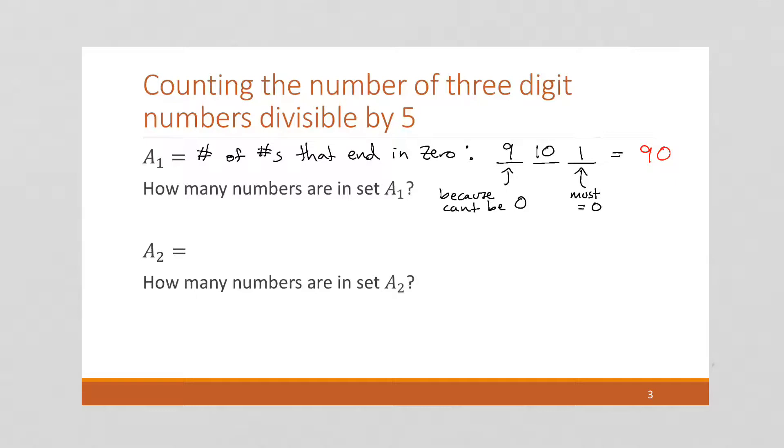So if we do the same here where these end in 5, well again, we're going to have three numbers. The last one has to be a 5. The first one is 9 for the same reason as above. And 10. And so we're going to get that there are 90 three-digit numbers that end in a 5.